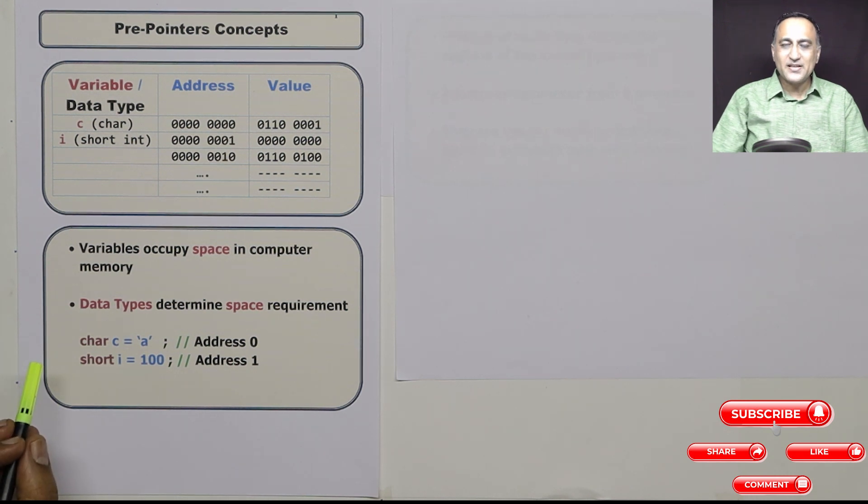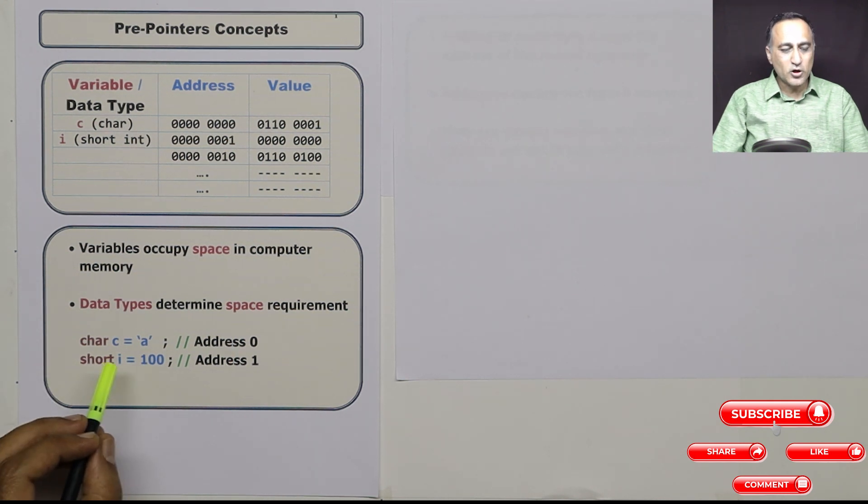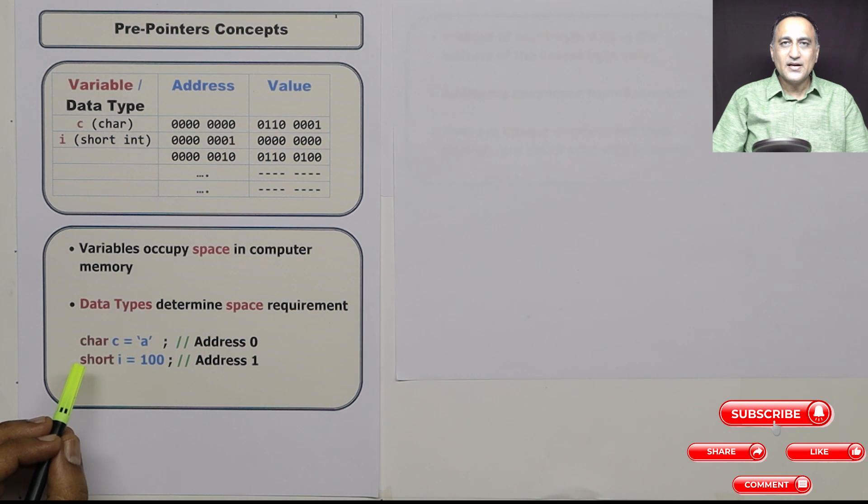For example, the character data type occupies one byte of memory. The short int on most machines is going to occupy two bytes. The normal integer is going to occupy four bytes and so on.